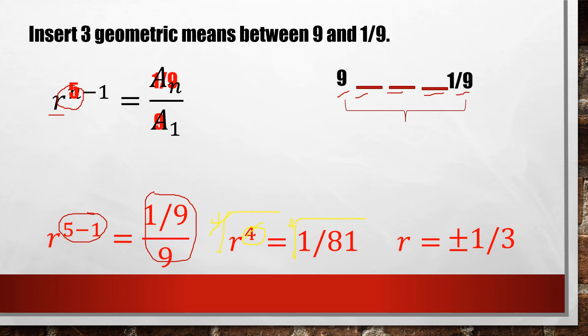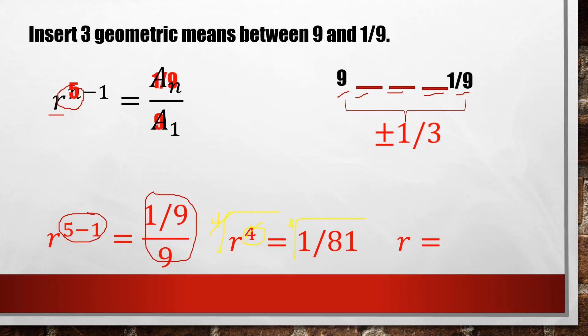Keep in mind that whenever you are taking a root of a number and the index of the root is an even number, it always results in two possible values — just like the square root, the fourth root, or the sixth root. There will be only one possible value if the index is an odd number, like the cube root, the fifth root, or the seventh root. That is why we have two possible values of the common ratio, and we will have two possibilities of geometric means to be inserted.